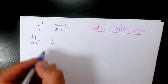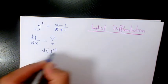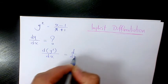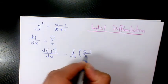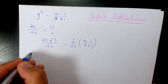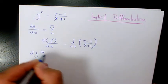So what I'm going to do, I'm going to take the derivative of y squared with respect to x equals the derivative of x minus 1 over x plus 1 with respect to x. The derivative of y squared is going to be 2y dy over dx.